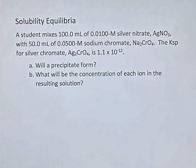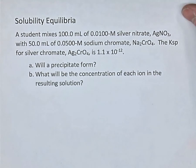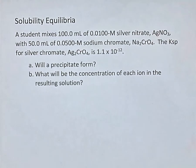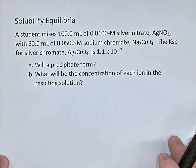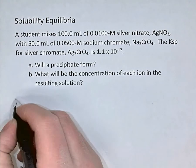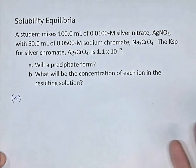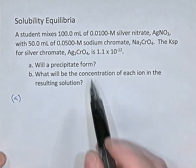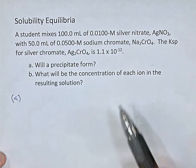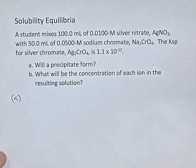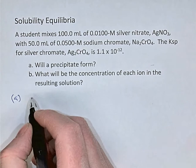But if the concentrations of the silver and chromate ions are low enough, the solution may not be saturated and there would be no precipitate. So the first part — will a precipitate form — is really asking: will silver chromate precipitate? The clue is that the KSP is given, so we focus on silver chromate. We want to calculate QSP, the reaction quotient for silver chromate in the mixed solution, and compare QSP to KSP. If QSP is bigger than KSP, yes, there will be a precipitate.